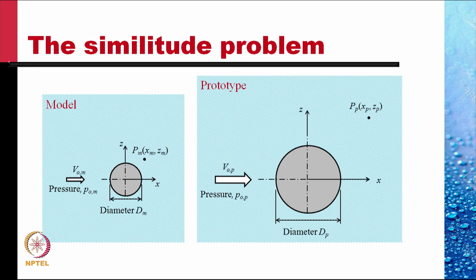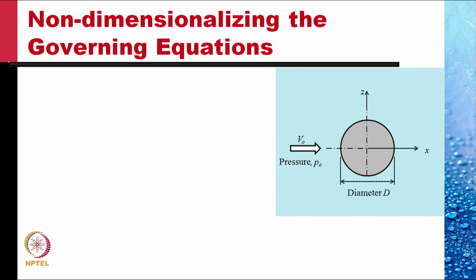The similitude problem is: if we have two systems, one a model and a prototype, that are geometrically similar, how else would the two problems be similar such that results from a model experiment — experimental or computational — can be used to predict the result for the prototype? Given the uniqueness parameters for the prototype, what should be the uniqueness parameters for the model so that this similitude is obtained? And once this similitude is obtained, what should be the prediction rules to predict the results for the prototype from the model results?